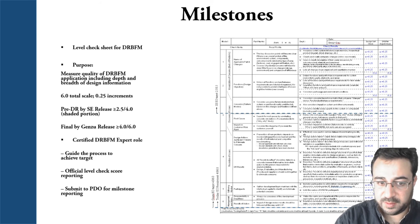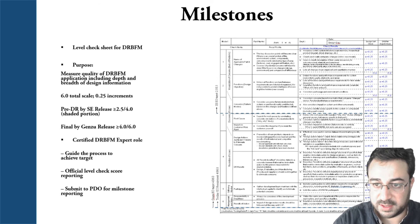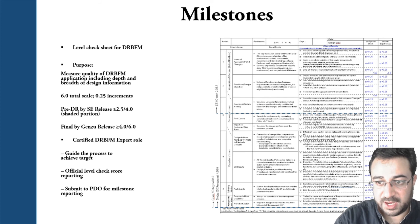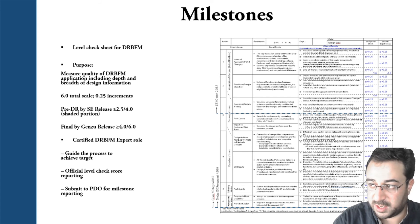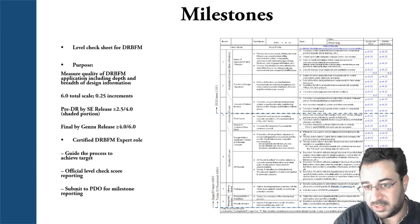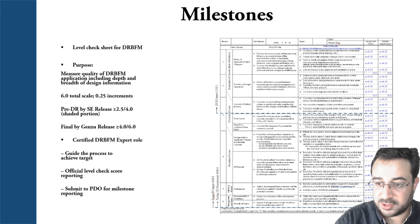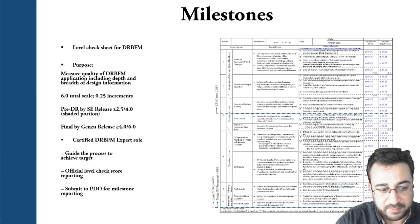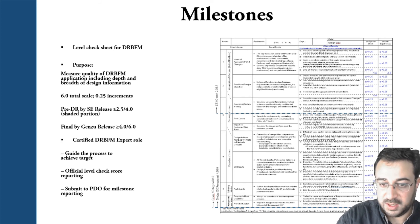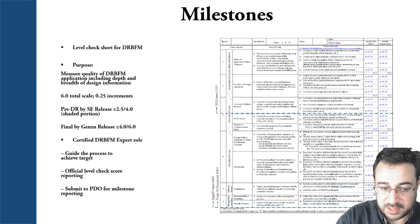Whoever is overseeing the DRBFM process should be a certified expert who went through similar training, so they can guide the process to achieve the target and make sure DRBFM is applied correctly. Misapplying DRBFM will give you fake results and a fake sense of success — you think you're doing great while still having the same problems. That expert will oversee the official level check score reporting, make sure everything looks fine and scores are acceptable, then submit all results to the milestone reporting.